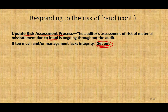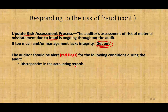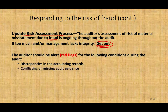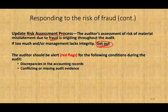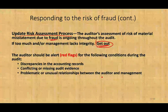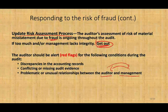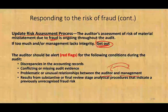What red flags should you be on the lookout for when conducting an audit and suspecting fraud? One is discrepancy in the accounting record — the record is not complete, something is missing. Or there's conflicting or missing audit evidence — the evidence to support the accounting record is either conflicting or simply not there. Another red flag is a problematic or unusual relationship between the auditors and management — management is giving the auditor a hard time, not answering questions, dragging their feet, not being cooperative, not providing evidence.